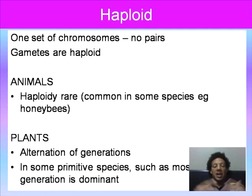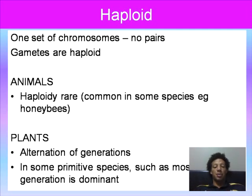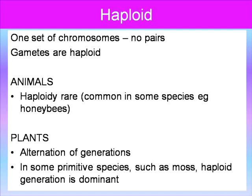Moving on — there are organisms where there are no pairs in the gametes. This is called haploid, which is the N number of chromosomes. In animals, haploidy is rare, but it is common in some species — for example, honeybees. In plants, alternation of generations occurs, and in some primitive species such as mosses, haploid generations are dominant. So a haploid organism has the N number of chromosomes. Humans have 2N — 23 pairs, or 46 chromosomes total. Some animals and plants do just have N chromosomes, which is quite interesting.